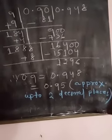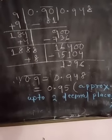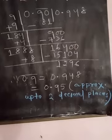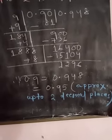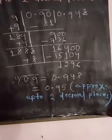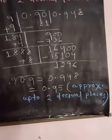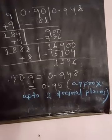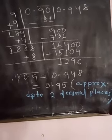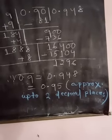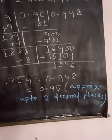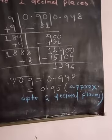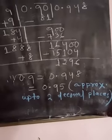Put one more 8 to the right of 188, it will be 1888. Similarly, put 8 in the question part. 1888 times 8, after multiplication it will be 15104.